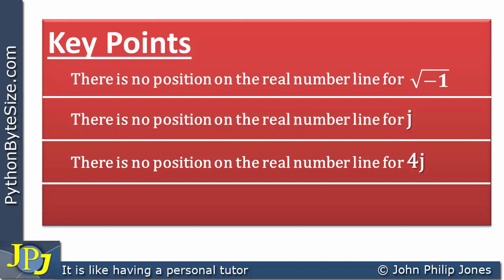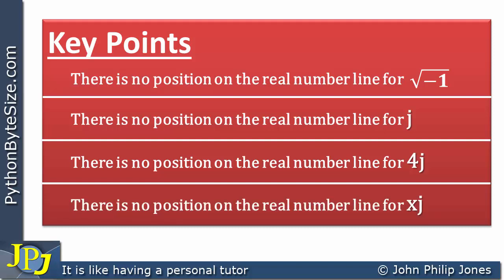There is no position on the real number line for xj, where x represents a number that tells us how many units we have of the imaginary component. If x was 55, you'd have 55 lots of j. x could also be a number with a fractional part, such as 33.34 or minus 55.75. So x represents a number and j is the imaginary unit. xj represents all of the imaginary numbers you can think of, but whichever one we choose — the square root of minus 1, j, 4j, or any other value — it doesn't exist on the real number line.